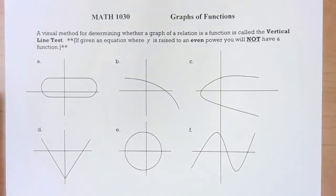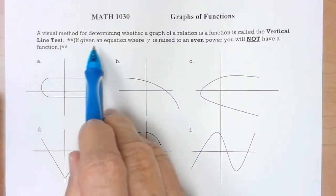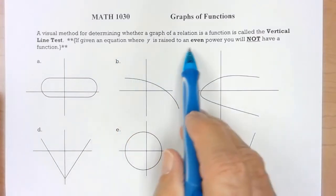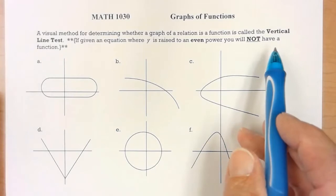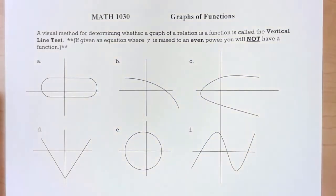Now we're going to look at graphs of functions. A visual method for determining whether a graph of a relation is a function is called the vertical line test. If given an equation where y is raised to an even power you will not have a function. I'll try and talk about that a little bit later.